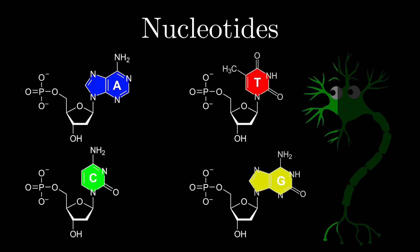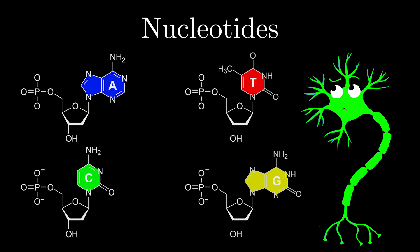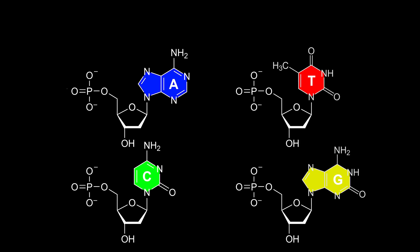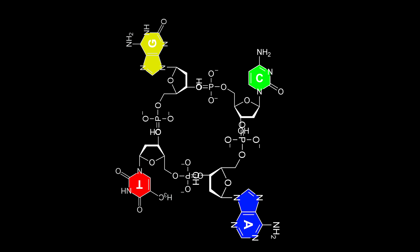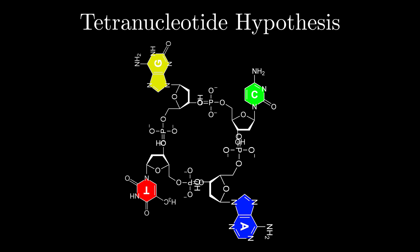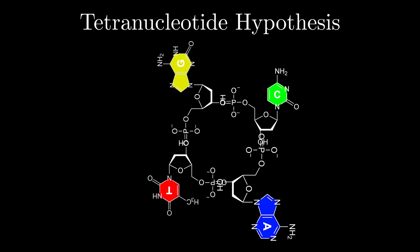So, these are the building blocks of DNA. But how do we actually put these building blocks together? At the start, many scientists thought that they combined like this, with four nucleotides making up one DNA. They called this the tetranucleotide hypothesis, with tetra meaning four, kind of like Tetris.